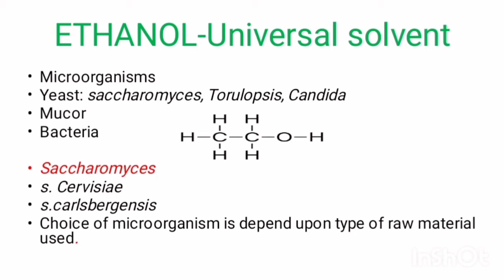We can produce ethanol by microbial fermentation process. Different microorganisms are used for the production process which include yeast, muca, and bacteria. Yeast species include Saccharomyces cerevisiae, Saccharomyces carlsbergensis, Candida, Chloromyces, etc. Mainly Saccharomyces is used.